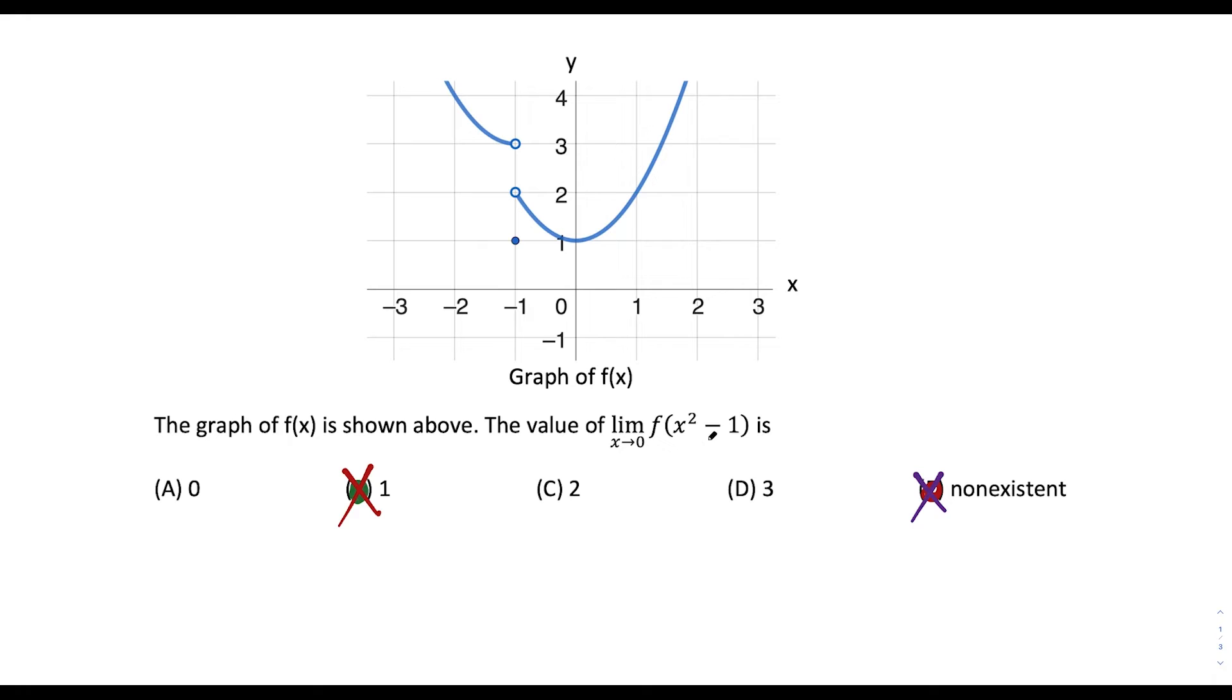Well, what you want to think about for this question is what x squared minus 1 looks like. x squared minus 1 is a parabola, and it hits the y-axis at negative 1 down here. But now think about the limit as x approaches 0 of x squared minus 1. We have to be very careful how we approach this.